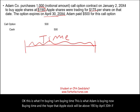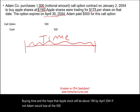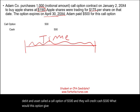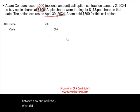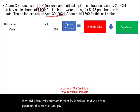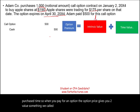Let's start with the journal entry. Adam will debit an asset called 'Call Option' for $500 and credit Cash $500. What would this option give Adam? The right to buy Apple stock at $190 between now and April. What did Adam really purchase for that $500? As I said, Adam purchased time. When you pay for an option, the option price gives you two components of value: something called intrinsic value and something called time value.